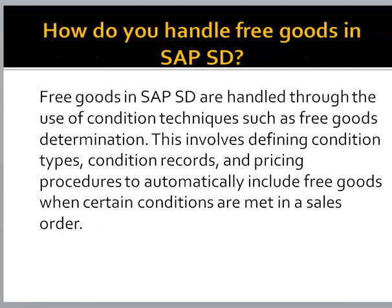How do you handle free goods in SAP SD? Free goods in SAP SD are handled through the use of condition techniques such as free goods determination. This involves defining condition types, condition records, and pricing procedures to automatically include free goods when certain conditions are met in a sales order.